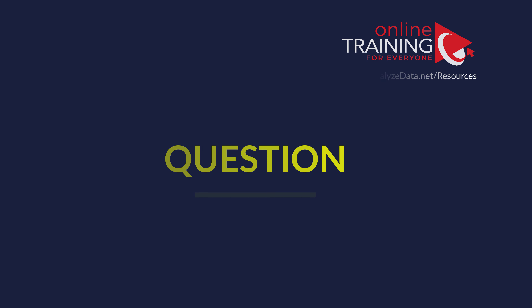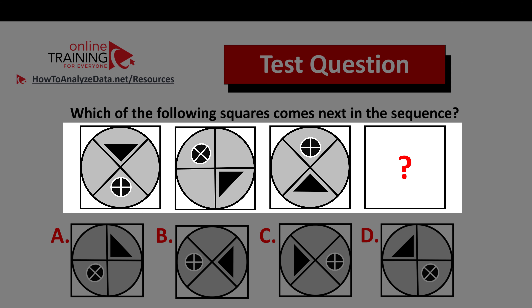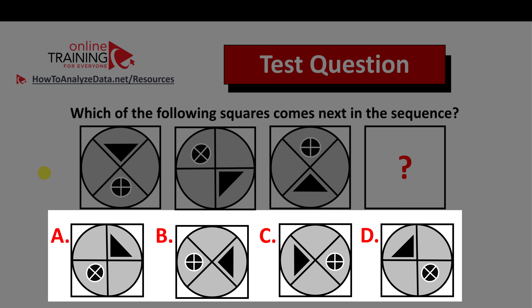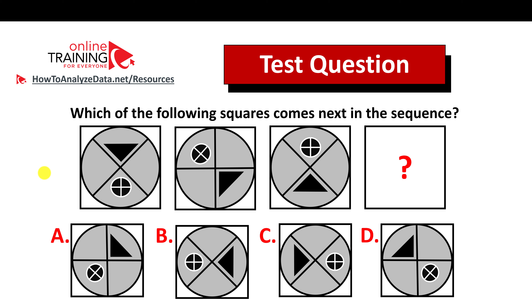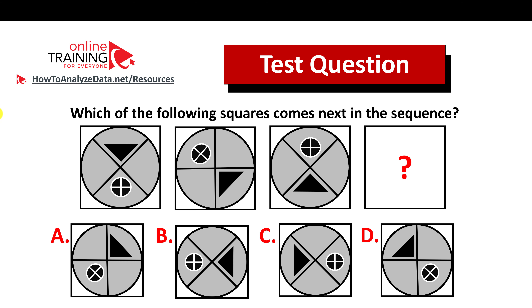Let's look at a very interesting question you might frequently see on the test. Which of the following squares comes next in the sequence? You're presented with four squares, each containing a circle with four quarters. In two of the quarters are different objects — a triangle and a smaller circle. You have triangles and circles as well as quarter sections in different positions. You need to determine which object comes next. There are four choices: A, B, C, and D. Give yourself 10 to 15 seconds to find the pattern.